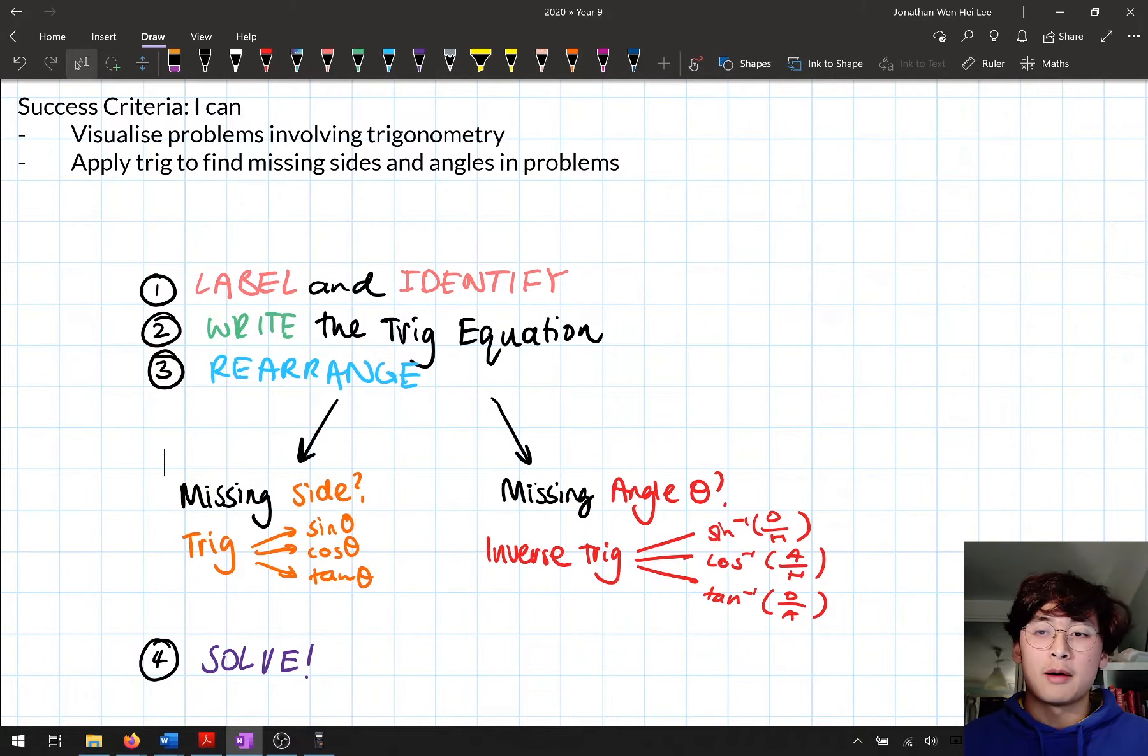Last term we had a look at Newman's analysis. Let me recap what we do when solving using Newman's analysis. Newman's analysis is a way that we can solve math problems, word problems, and problems in mathematics. It's a systematic way of approaching a problem in math. When we did Newman's analysis there were five steps.